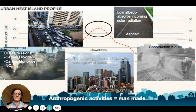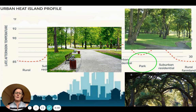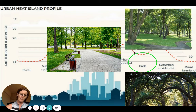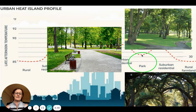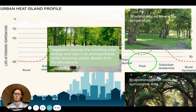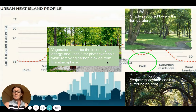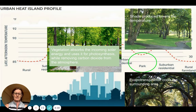We can also talk about dust and construction as anthropogenic activities. Looking at the profile, you can see a dip — there may be a park in the urban area. Large trees provide a lot of shade. Vegetation does absorb incoming solar radiation — it has a low albedo level — but it uses that energy for photosynthesis, which removes carbon dioxide from the atmosphere. This is a management strategy used in cities like Singapore.